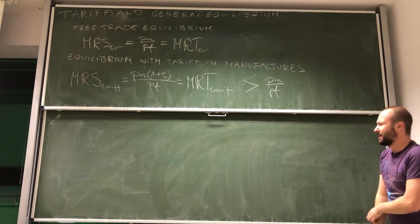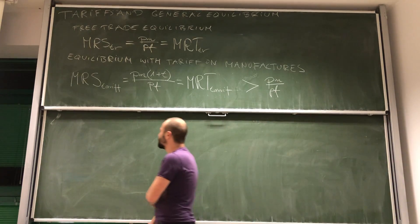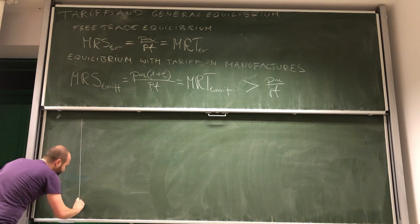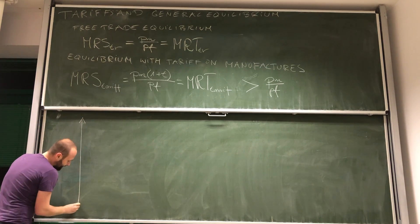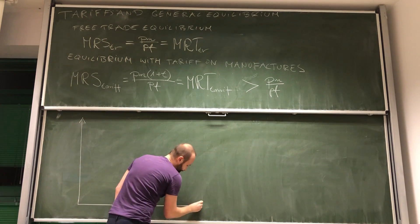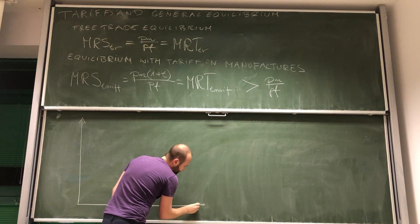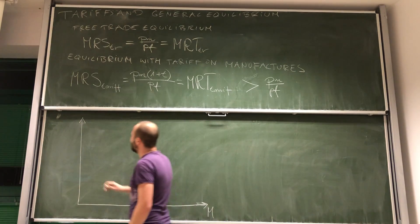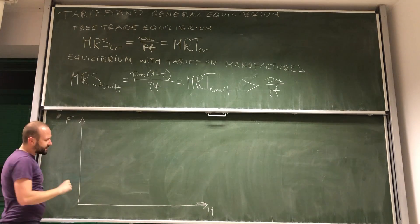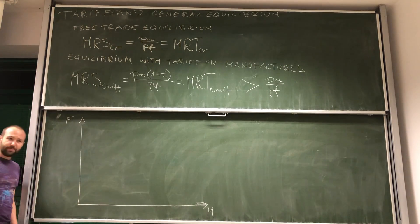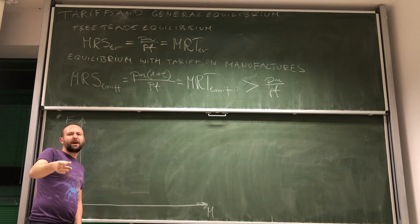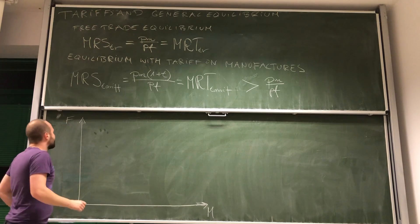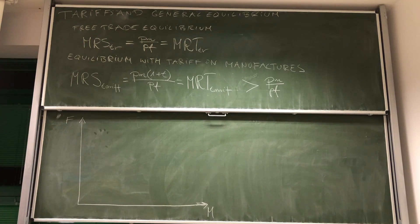Not to complicate things, from now on we're just going to use one country. With one country the graphs are already very hard to draw, so let's not complicate our lives even more and just use one country. So here we have manufacturers on one axis and here we have food. Let's just say that we are considering a country that is labor abundant, so it specializes in the production of food and exports it.